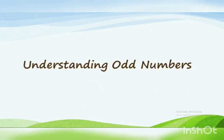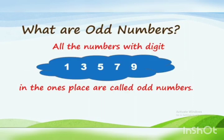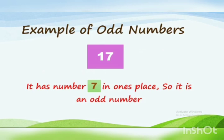Now let us understand the meaning of odd numbers. All numbers with digit 1, 3, 5, 7, or 9 in the ones place are called odd numbers. For example, we take the number 17 — it has number 7 in one's place, so it is an odd number.